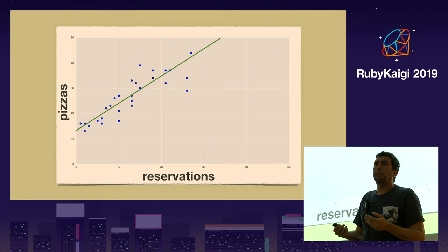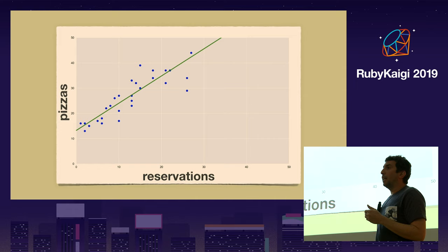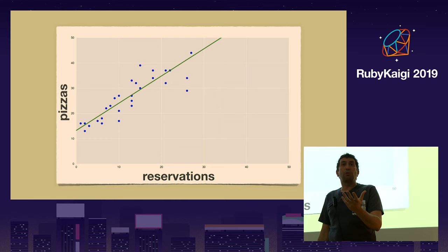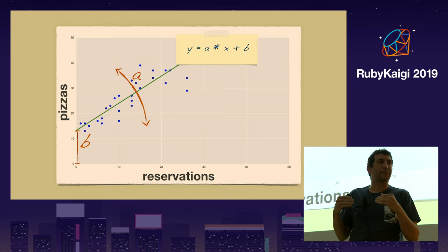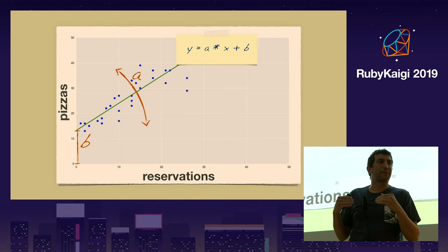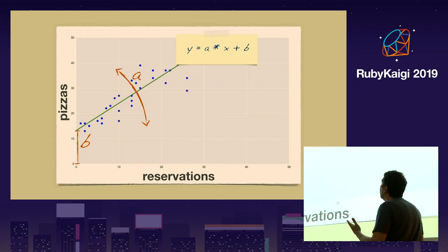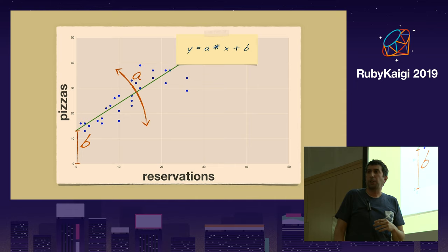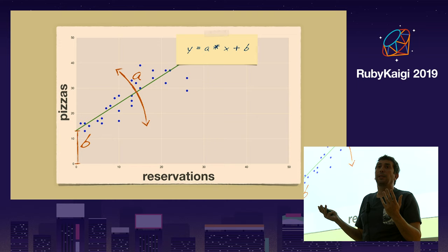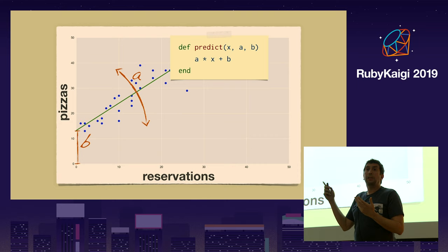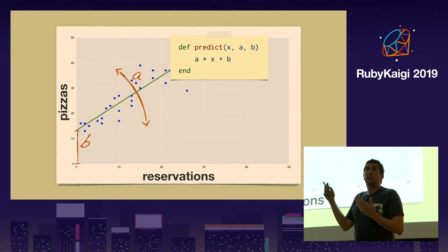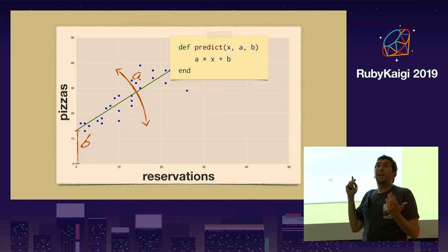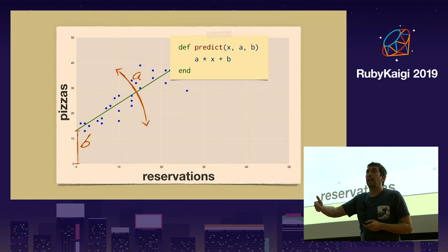A line has a pretty simple equation that I can implement in software. I call the two parameters A and B: the slope of the line and the intersection with the vertical axis. The important part is you have two parameters — if you have A and B, you have the line. Once you have the line, you can use it to predict the future with a function that takes X, the number of reservations, and outputs the predicted number of pizzas.